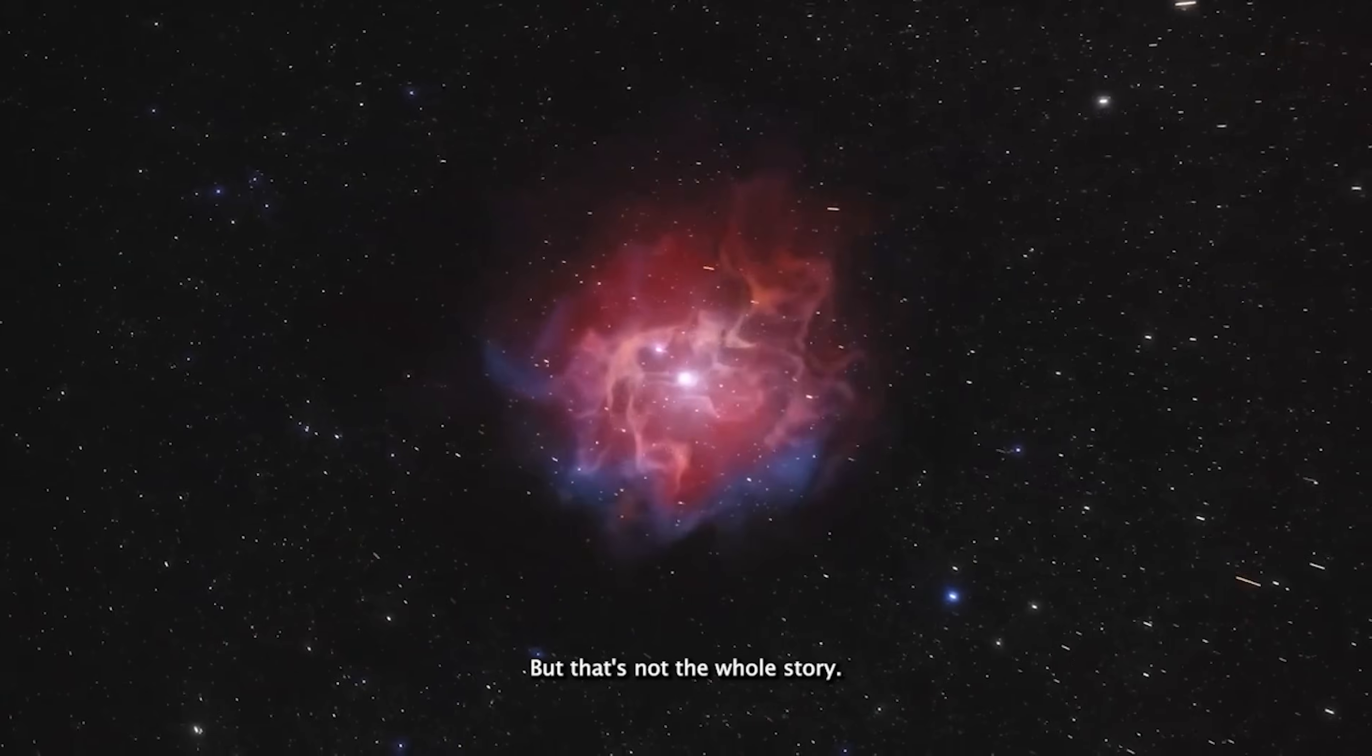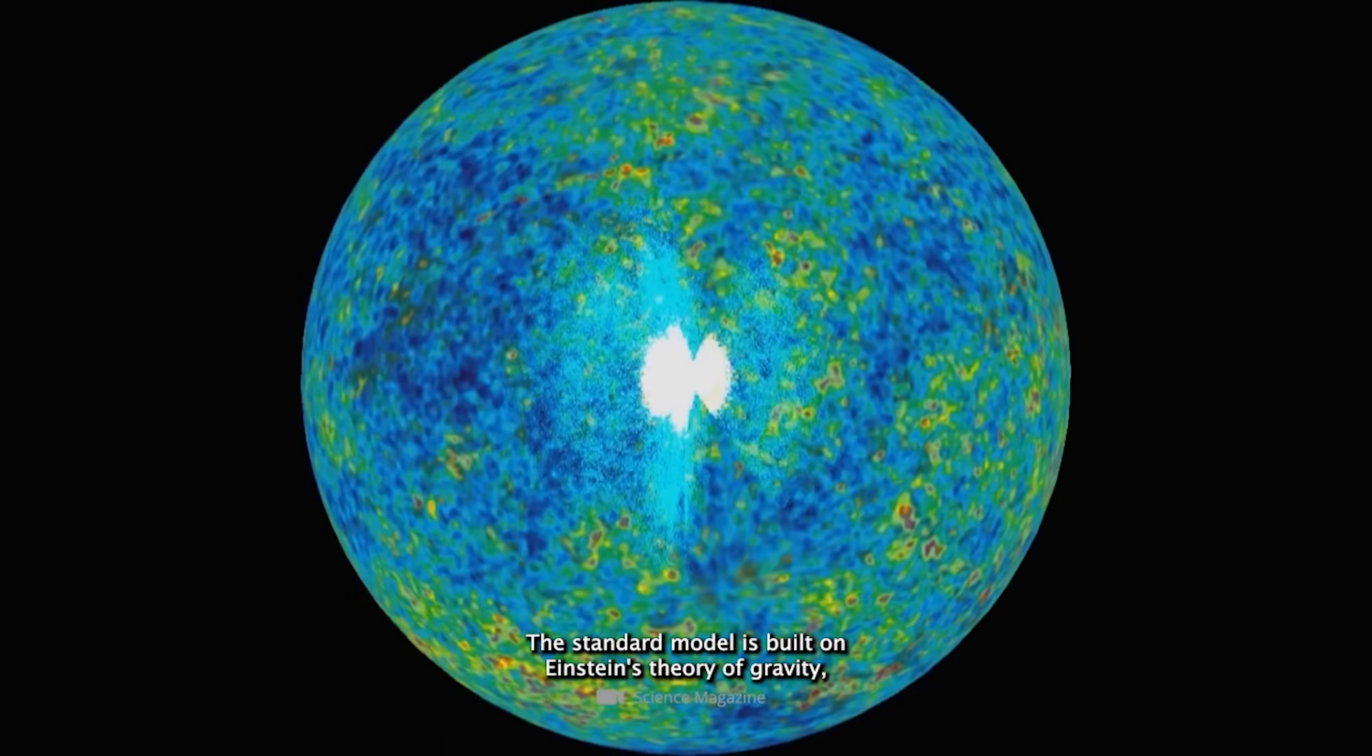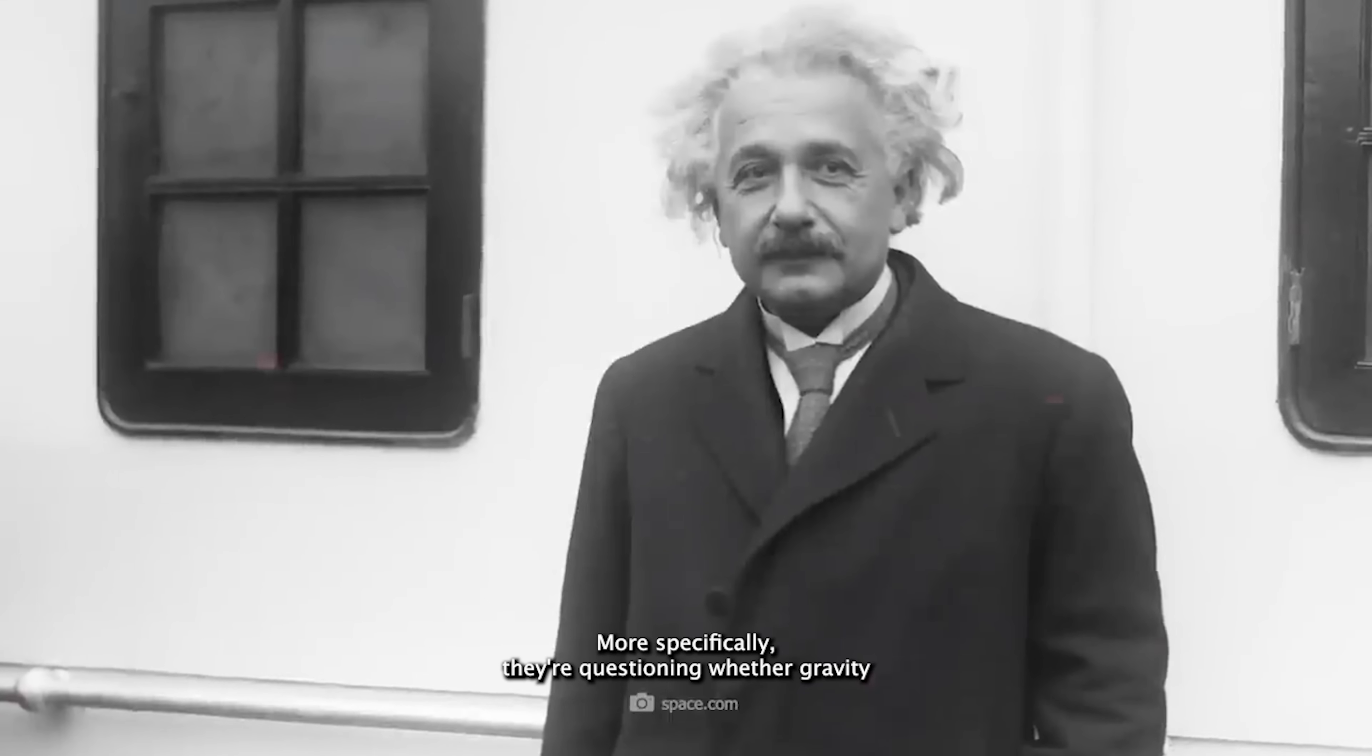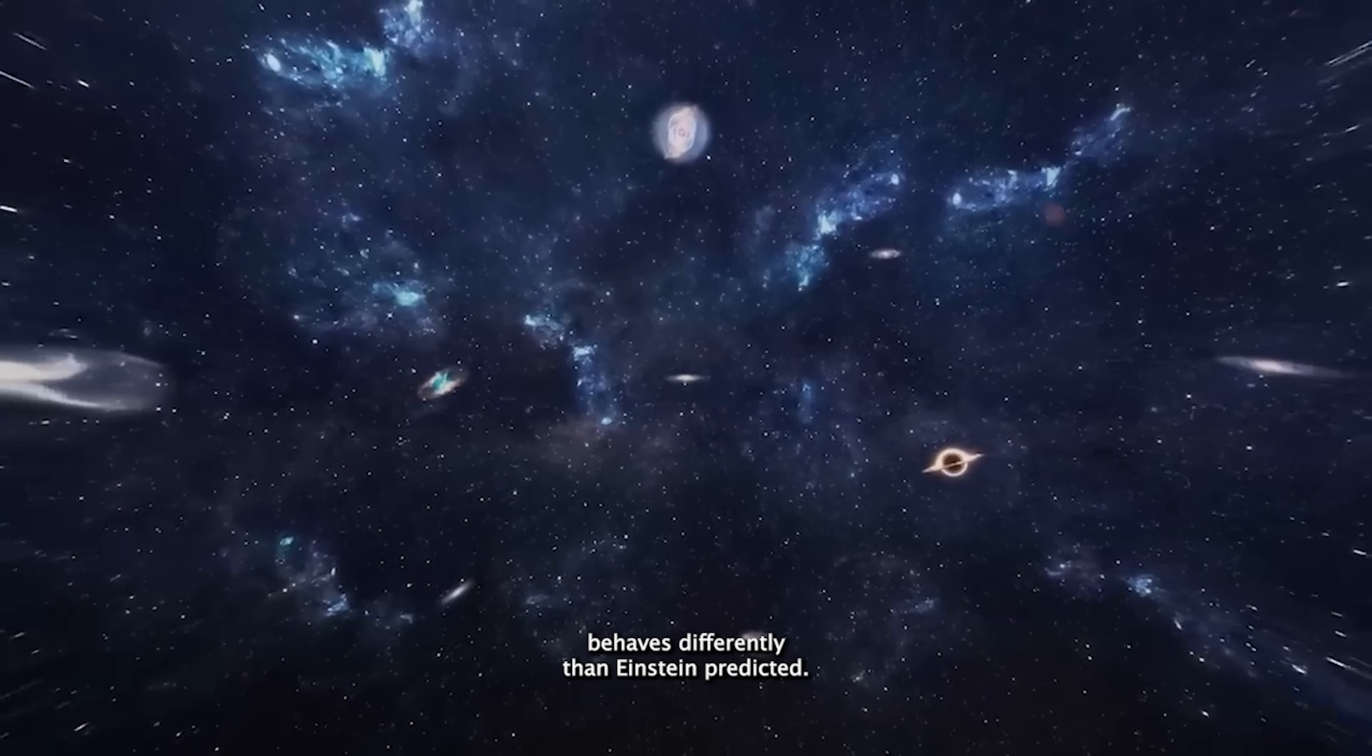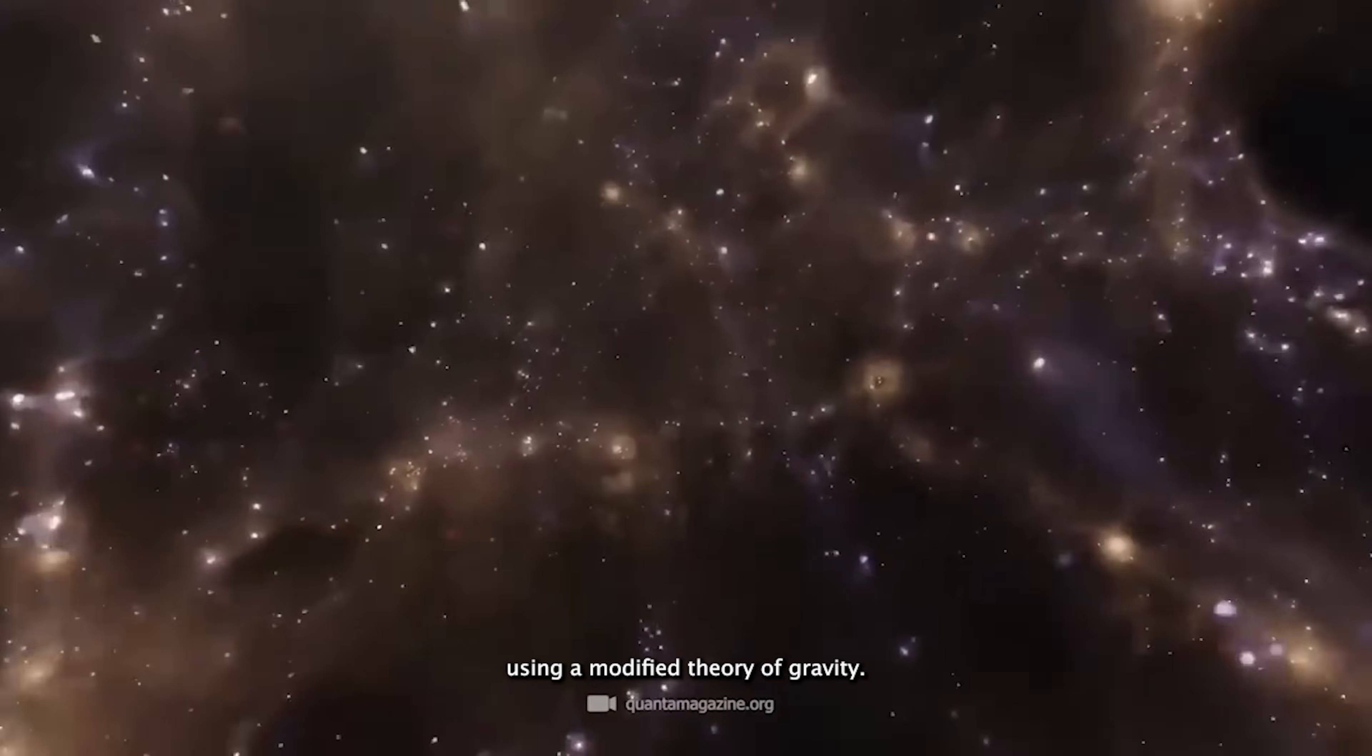But that's not the whole story. The scientists also point out something even more intriguing. The Standard Model is built on Einstein's theory of gravity, and it's possible that Einstein wasn't entirely right. More specifically, they're questioning whether gravity behaves differently than Einstein predicted. To explore this, the researchers ran computer simulations using a modified theory of gravity.